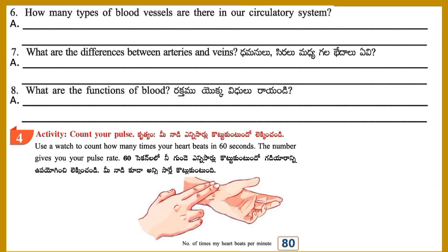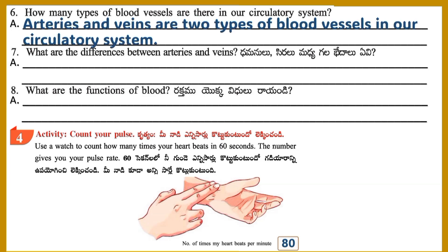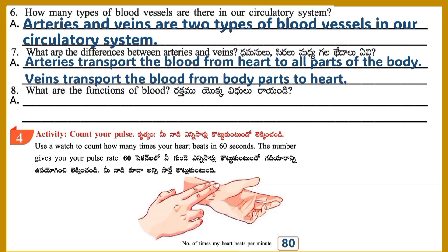Question 6: How many types of blood vessels are there in our circulatory system? Answer: Arteries and veins are two types of blood vessels. Arteries transport blood from the heart to all parts of the body. Veins transport blood from body parts to the heart.